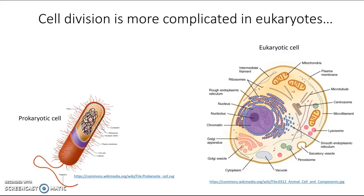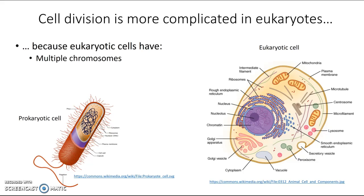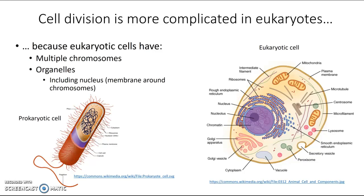But cell division is going to be more complicated in eukaryotes because eukaryotes have a lot more going on. They have multiple chromosomes and also organelles, most notably that nucleus, which means there's a membrane around the chromosomes. This is going to make it a little tougher to separate the copies of the chromosomes, so eukaryotic cells are going to have to do a little more prep work to get ready for cell division.